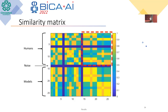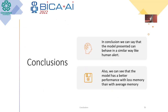That is important because our model seems to work. In conclusion, we can say that the model presented can behave in a similar way to humans. Also, we can see that the model has better performance with loss memory than with average memory.